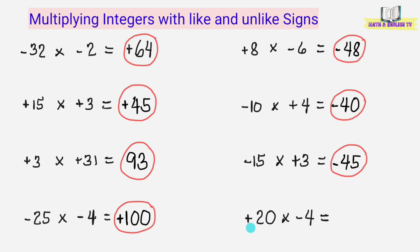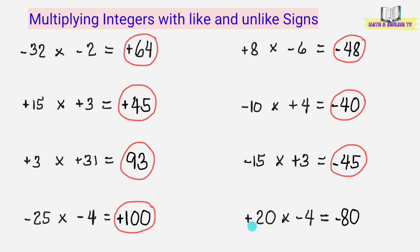Last, positive 20 times negative 4. Imultiply natin: 20 times 4 equals 80. At lalagyan natin ng negative sign, dahil magkaiba yung signs ng numbers na ating iminultiply. Ang answer ay negative 80.